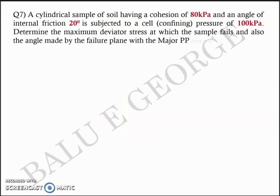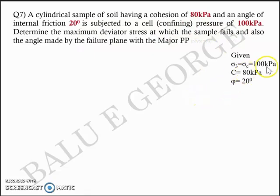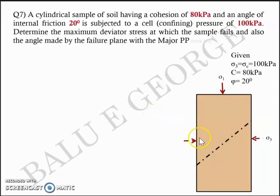Question 7: A cylindrical sample of soil having a cohesion of 80 kPa and an angle of internal friction of 20 degrees is subjected to a cell pressure or confining pressure of 100 kPa. Determine the maximum deviator stress at which the soil sample fails, and also the angle made by the failure plane with the major principal plane. You are given sigma 3 equal to 100 kPa, cohesion c equal to 80 kPa, and phi equal to 20 degrees. You need to find sigma 1 minus sigma 3, the maximum deviator stress at failure.